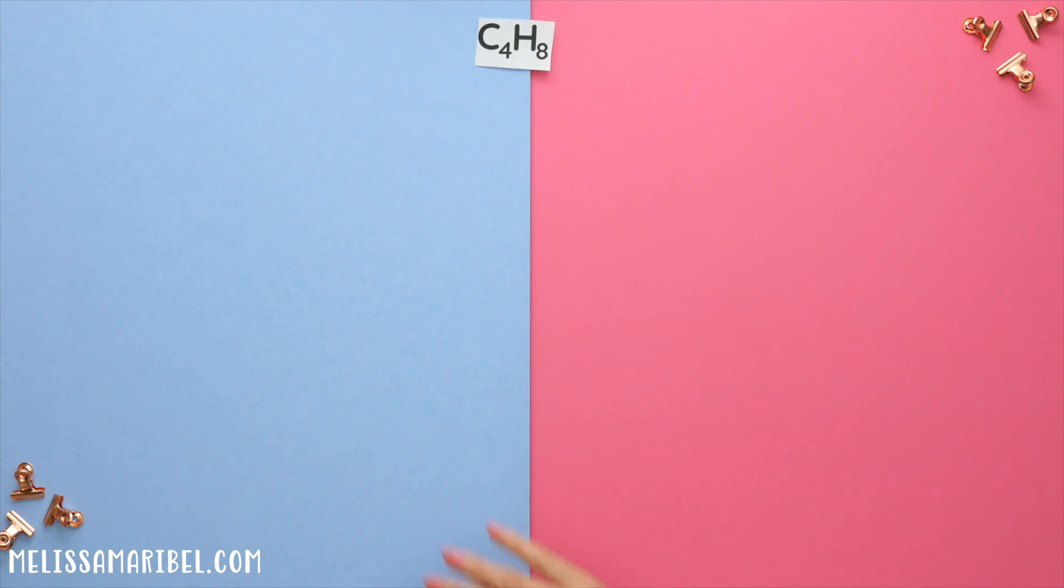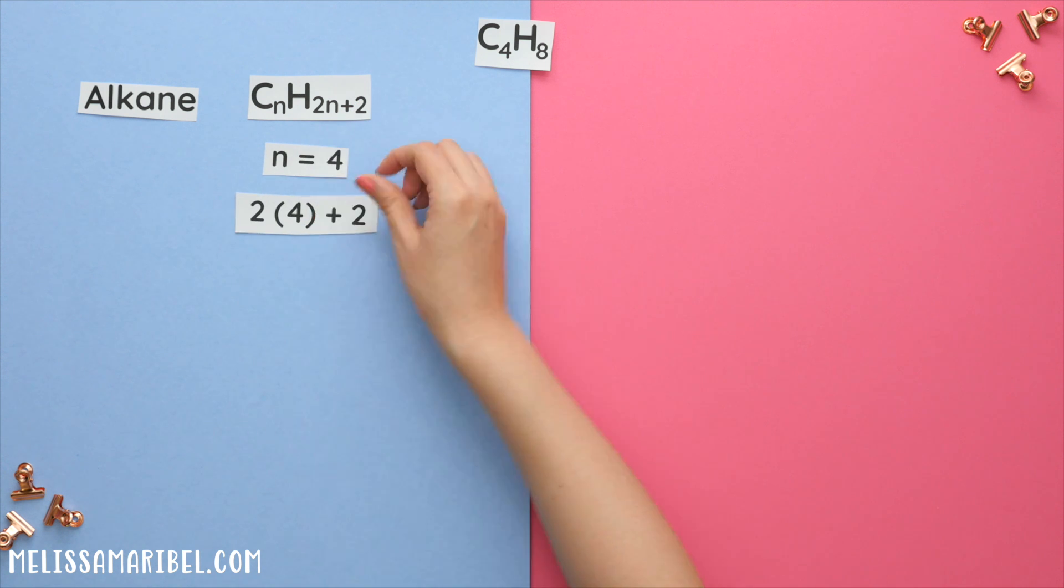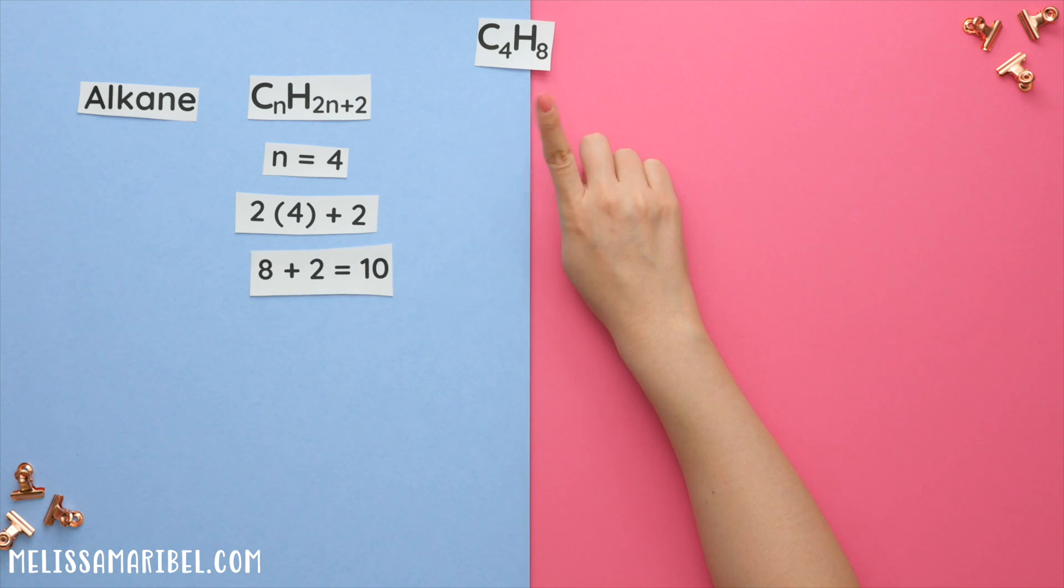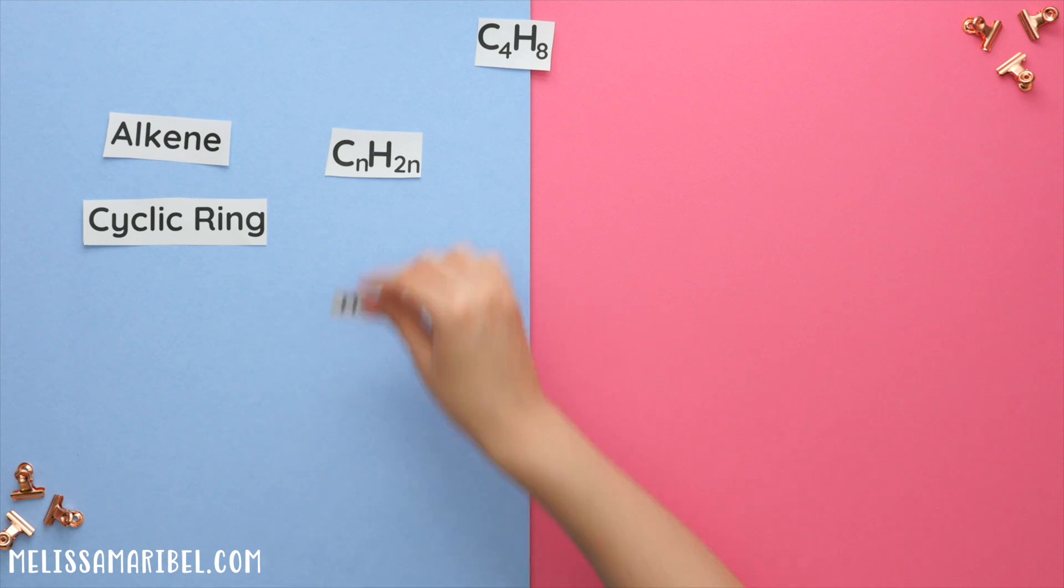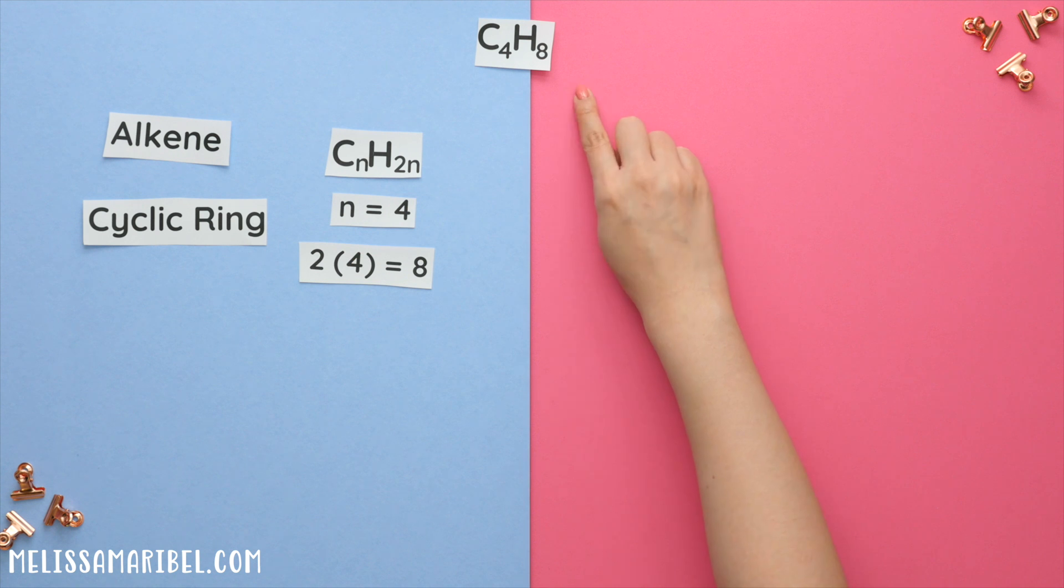The second question asks us to find all the constitutional isomers for C4H8. So we'll check and see if this is an alkane or an alkene or cyclic ring. I'll start with the alkane formula where n is 4. And if we were to plug in 4 for n, we have 2 times 4 is 8 plus 2 is 10. So no, it's not an alkane since we have 8 hydrogens and not 10. But I'll try the alkene slash cyclic ring formula where n is 4. And we'll plug in 4 for n, so 2 times 4 is 8. So yes, this is an alkene and cyclic ring.